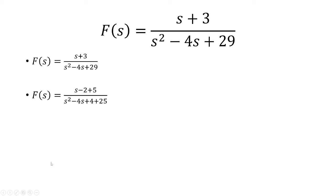Let's rewrite s plus 3 as s minus 2 plus 5, and rewrite s squared minus 4s plus 29 as s squared minus 4s plus 4 plus 25. The reason we're going to break it up like this is because we want to factor.